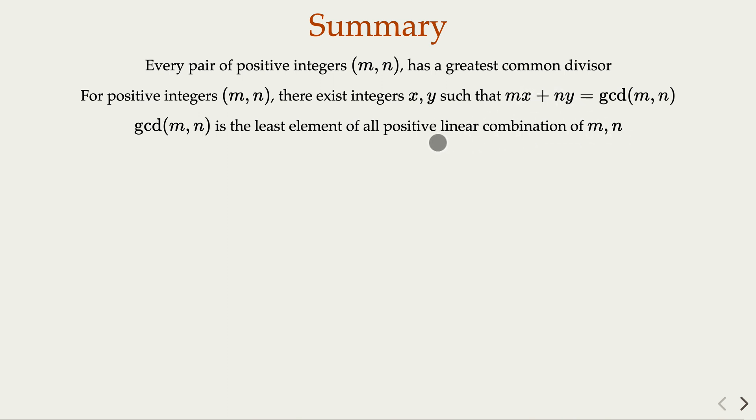Now x and y, however, can be negative. So what we're doing by the construction that gcd is the least element of the set X in our construction.